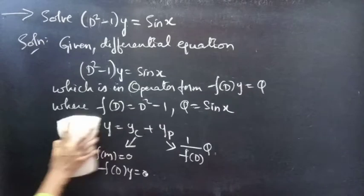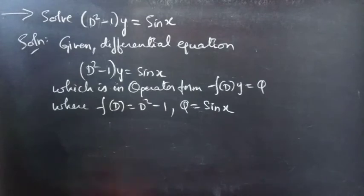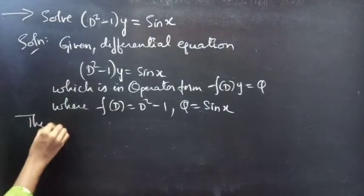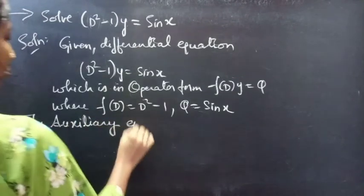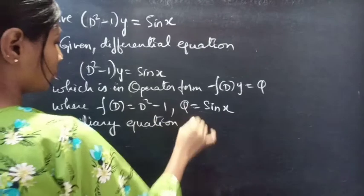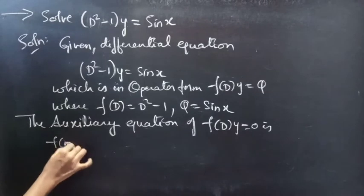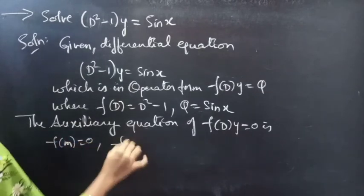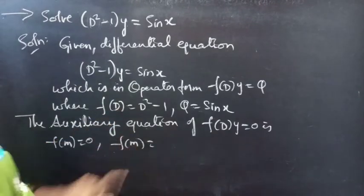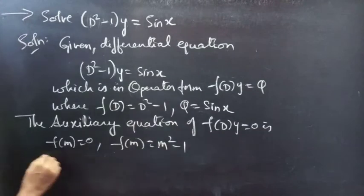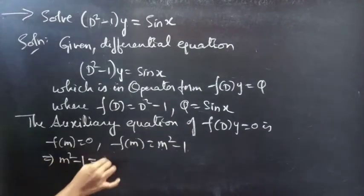First let's find yc using the auxiliary equation. The auxiliary equation of f(D)·y = 0 is f(m) = 0. Here f(D) = D² - 1, so we replace the differential operator D by m to get f(m) = m² - 1. Our auxiliary equation becomes m² - 1 = 0.